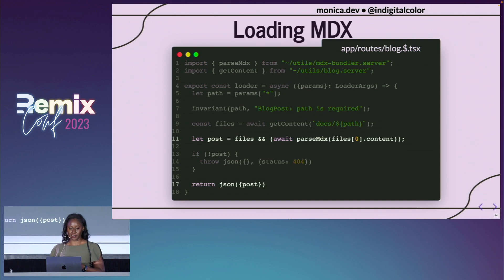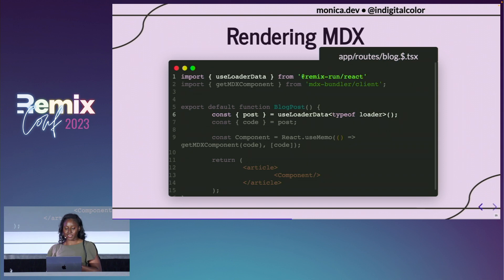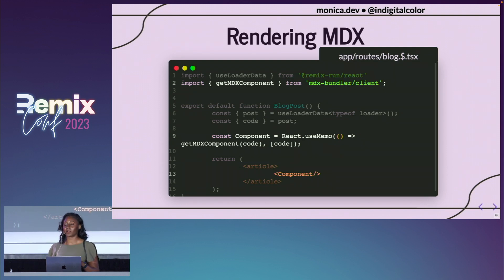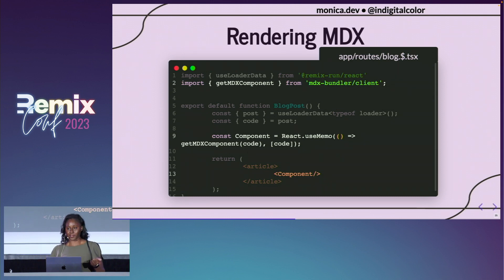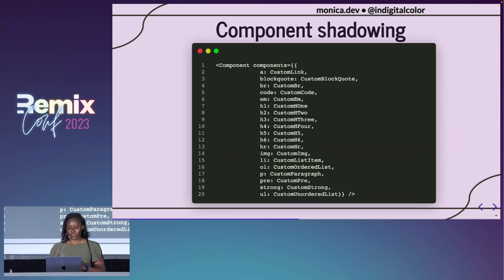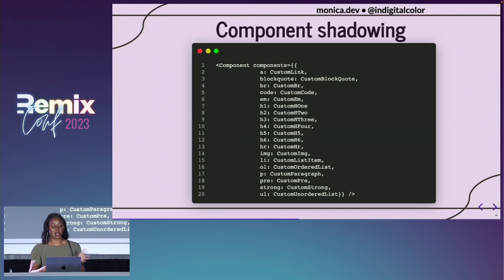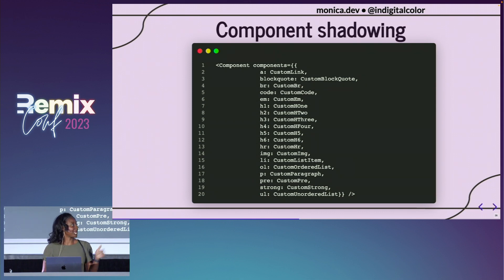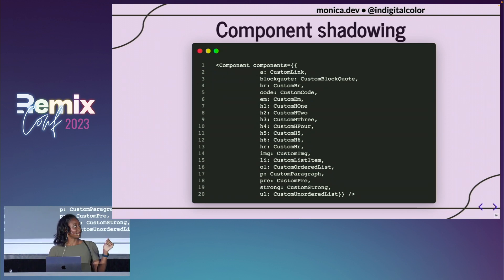We're able to return JSON, and when actually rendering the data we have access to what we called in our loader function. We can use a special component from MDX Bundler called getMDXComponent, where we pass in the code we got from our loader function, and then render the component to the page. With MDX, you can actually replace different HTML elements — so if we wanted to replace a blockquote or an H3, we can use this syntax to indicate we want to replace that specific element.